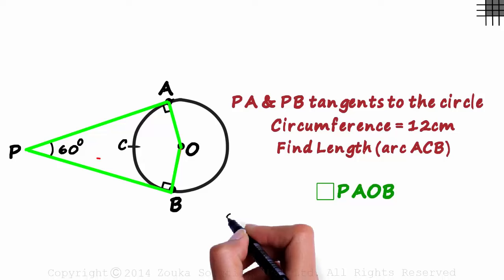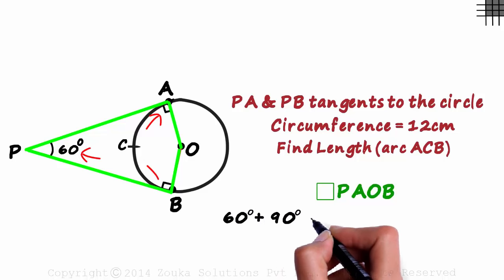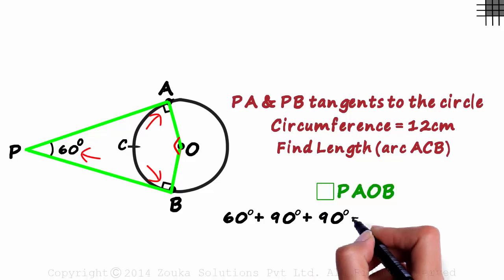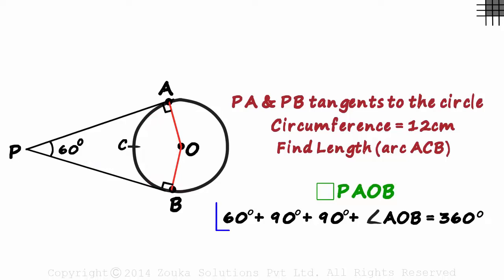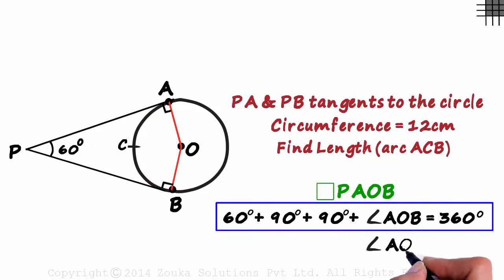With respect to this quadrilateral, we can say that 60 degrees plus 90 degrees plus 90 degrees plus angle AOB will equal 360 degrees. This gives us the measure of angle AOB as 120 degrees.